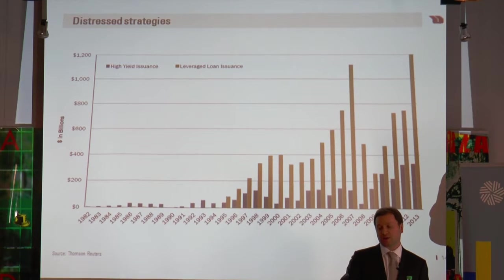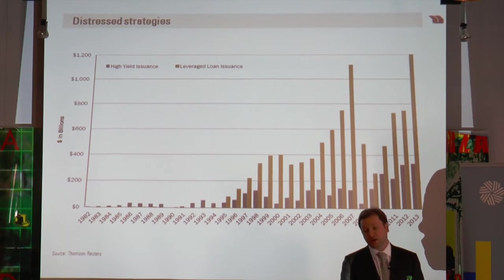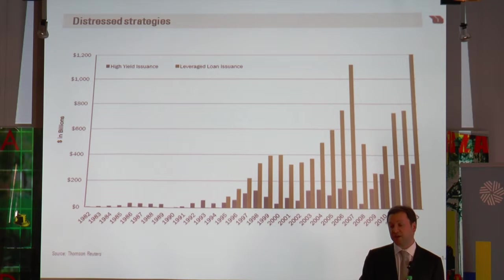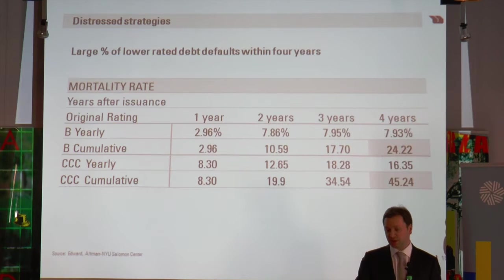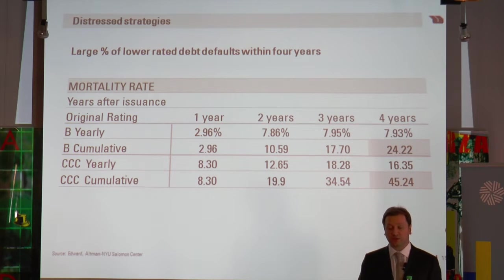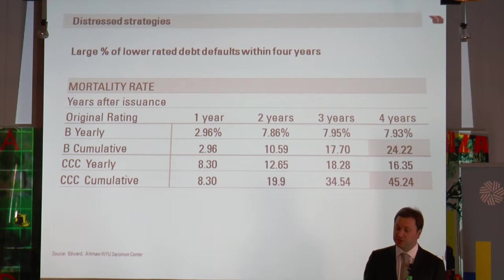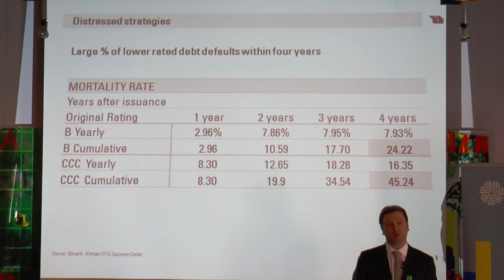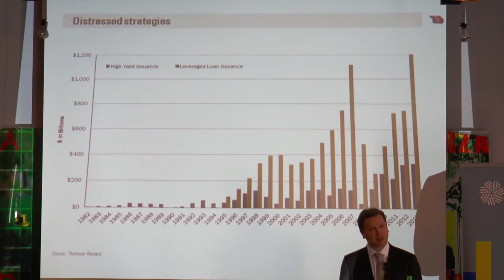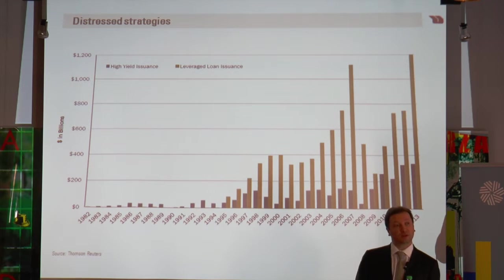Looking at high yield and leveraged loan issuance in the US market, this year has been spiking again — very, very active. In general, when you have huge demand and huge volume of new debt, you can expect that the debt is getting lower and lower in quality. There are statistics on mortality rates: if you take a single B bond, on average after four years 24% of the bonds have defaulted. For a triple C bond after four years, on average 45% have defaulted. Looking at the cycle, we are piling up for some defaults in the future.